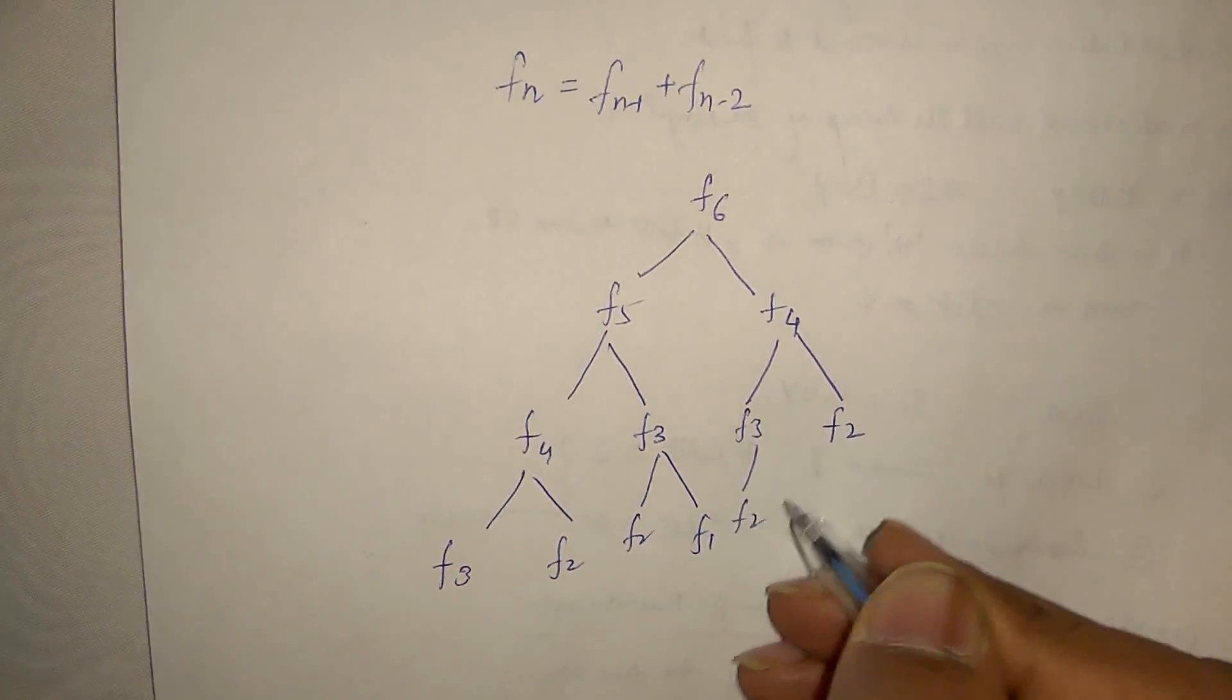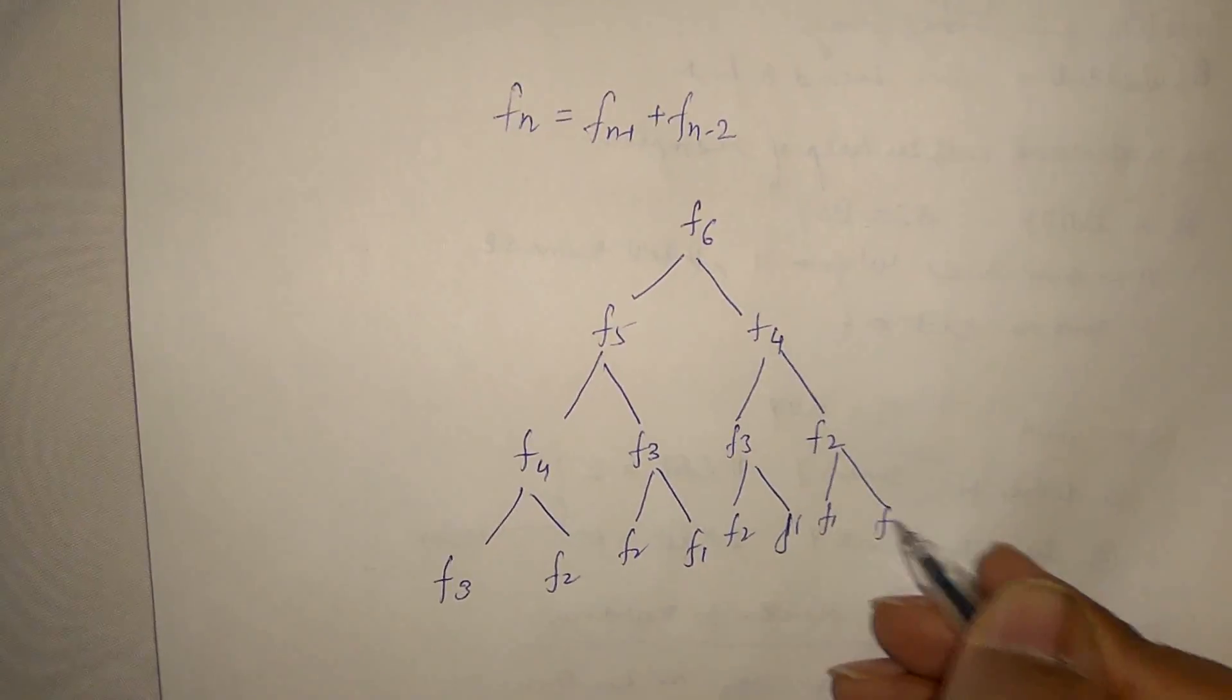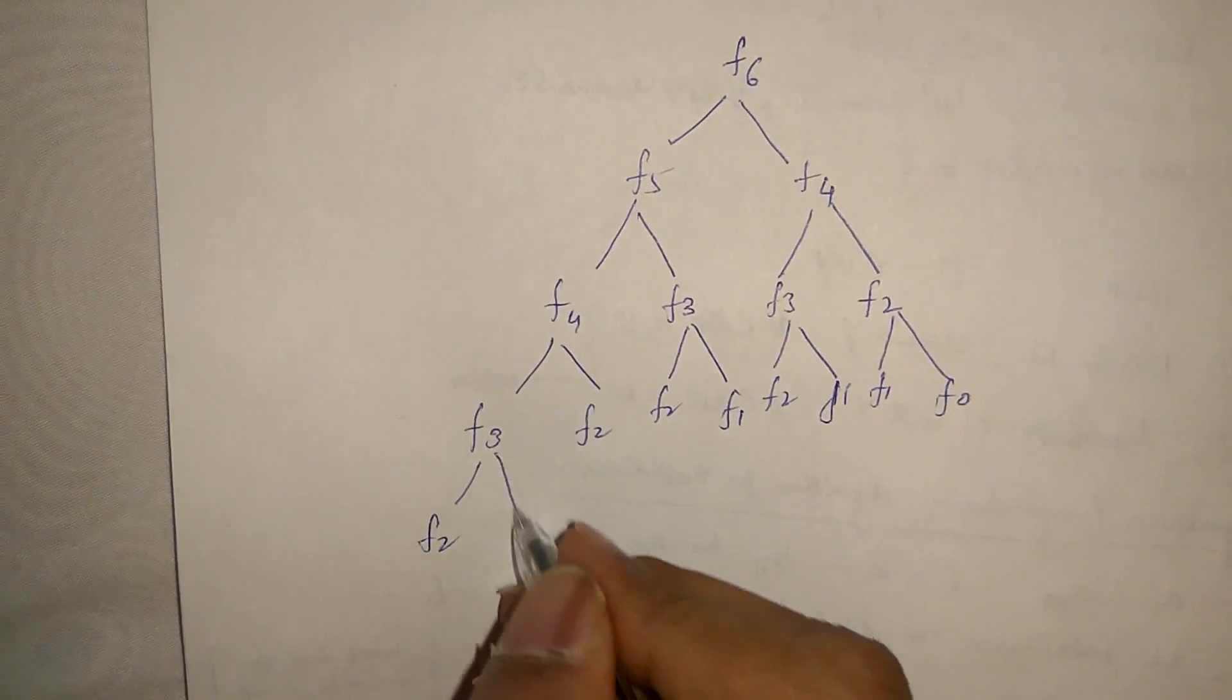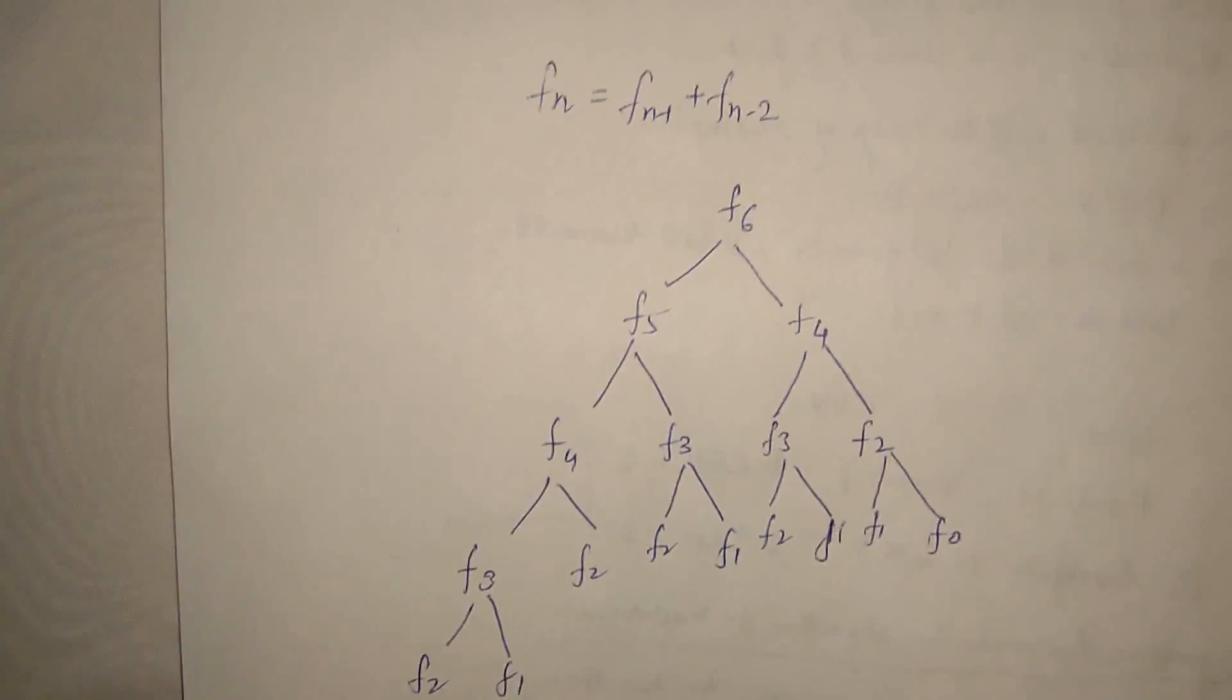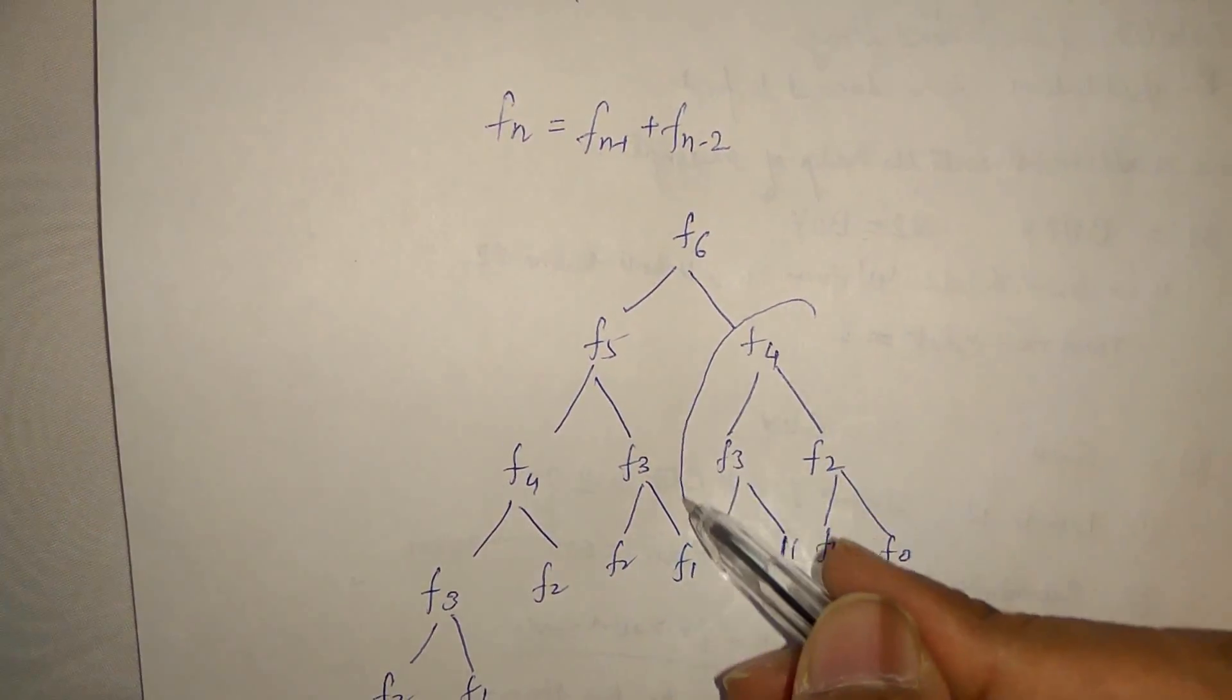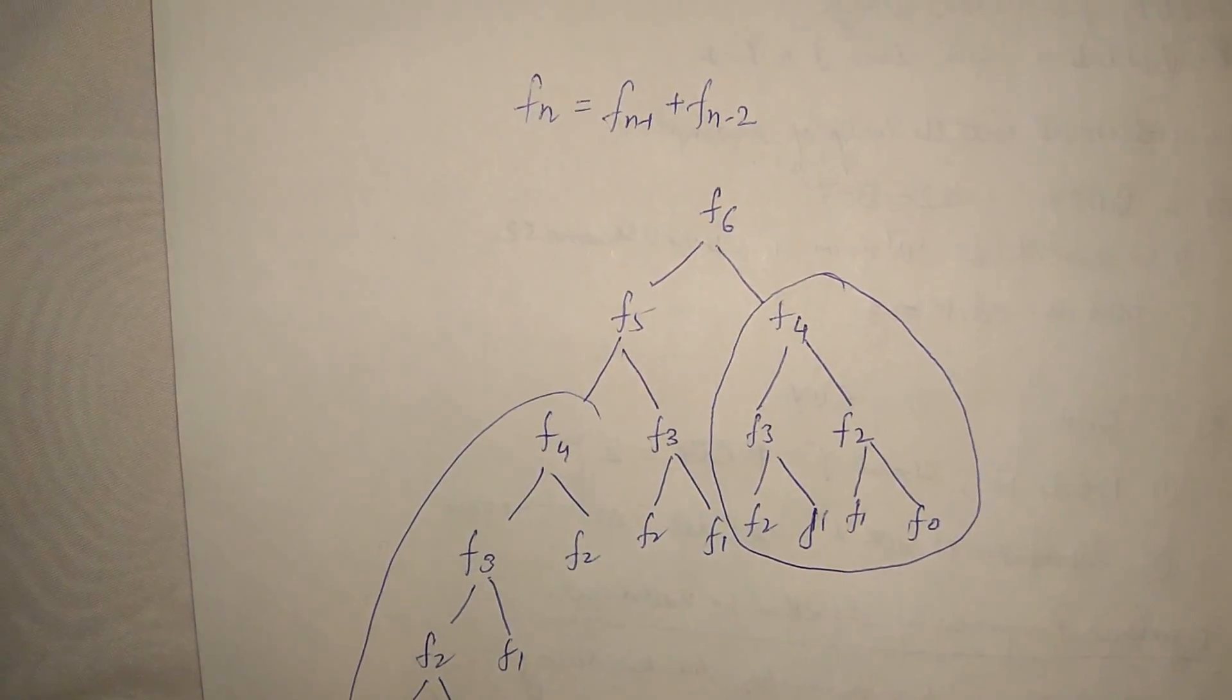This is two, one, this is one and zero. Similarly, this will be two, one, one, and zero. So if you see this F4 computation here and this F4 computation here.